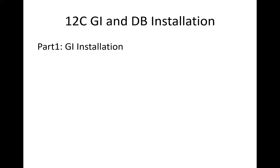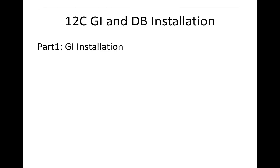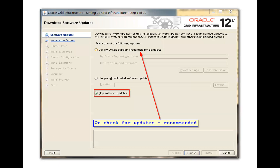So once we go through the screenshots, we'll do the actual deployment in our live lab environment. This has two parts as usual: part one is GI installation and part two is Oracle Home installation. In part one, the moment you run the run installer, it'll ask for the software update. You can skip it, as you can see in the screenshot here.